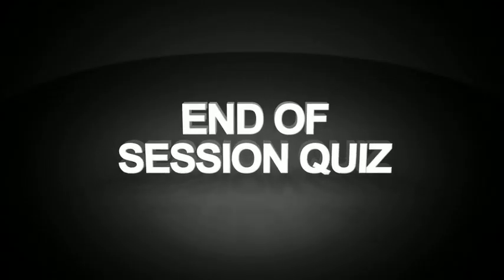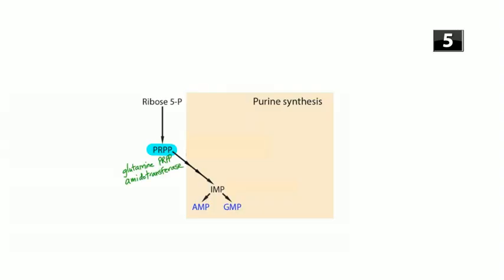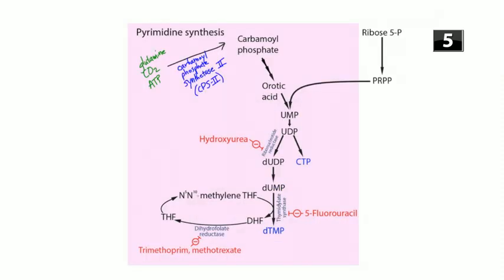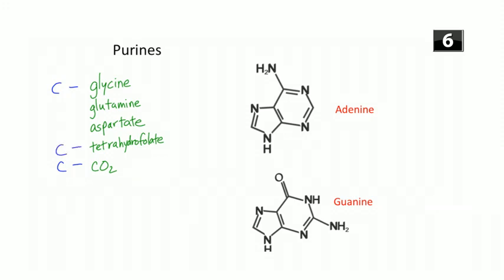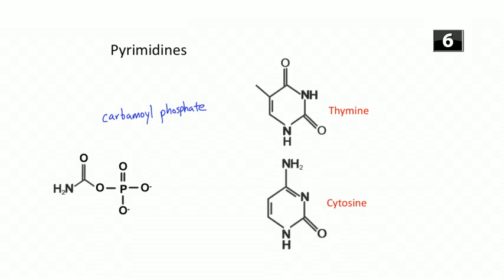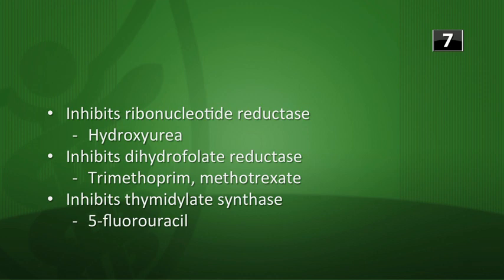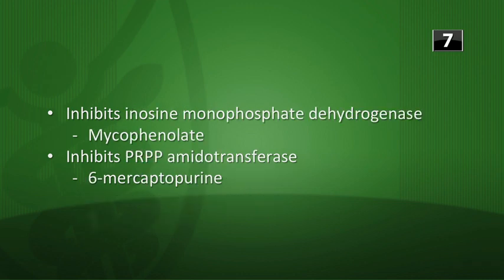End-of-session quiz answers: The rate-limiting enzyme in purine synthesis is glutamine PRPP amidotransferase; in pyrimidine synthesis it's CPS2. Carbon sources for purines are CO2, glycine, and tetrahydrofolate; aspartate and glutamine provide nitrogen. Carbon sources for pyrimidines are aspartate and CO2; glutamine provides nitrogen. Drug matches: hydroxyurea inhibits ribonucleotide reductase; trimethoprim and methotrexate inhibit dihydrofolate reductase; 5-fluorouracil inhibits thymidylate synthase; mycophenolate inhibits IMP dehydrogenase; 6-mercaptopurine inhibits PRPP amidotransferase.